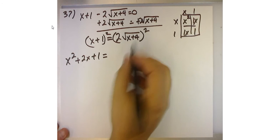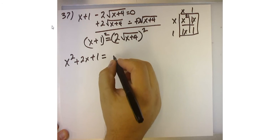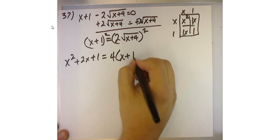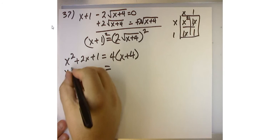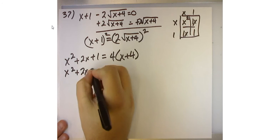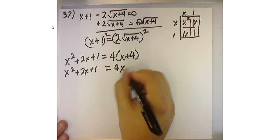When I square this, 2² is 4, and then I'm left with x+4. So now I'm going to distribute the 4 through the parentheses. And when I do that, on the right-hand side, I get 4x+16.